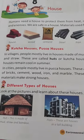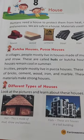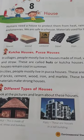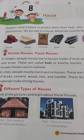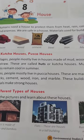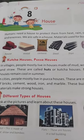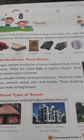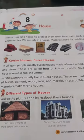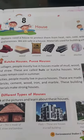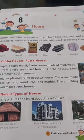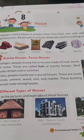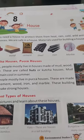So what is a house? A house is a place where we live in. Humans need a house to protect themselves from heat, cold, wild animals, and enemies. Our house keeps us safe.